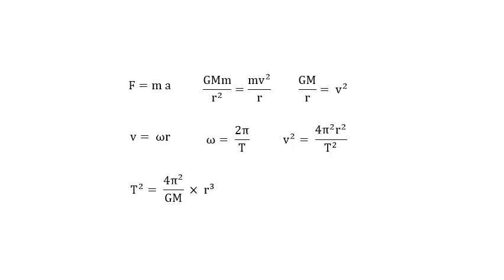You need to be able to derive that T² is proportional to R³ — the specification explicitly states you must derive it. We start with F = ma: F is GMm/r², and ma is mv²/r for circular motion. Cancelling the small m's and one r gives GM/r = v².